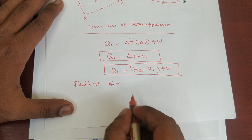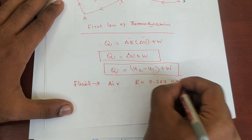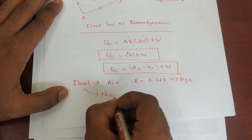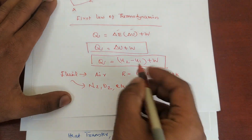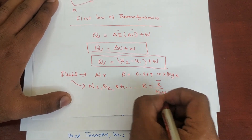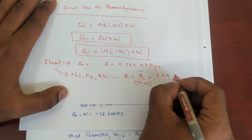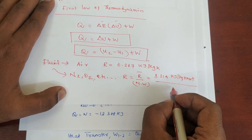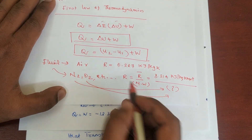If we use R for air, we use 0.287 kJ per kg Kelvin. Suppose in the fluid we have nitrogen, oxygen, or others — if we use the R value, R is equal to R-bar divided by molecular weight. R-bar is the universal gas constant: 8.314 kJ per kg Kelvin per mole, divided by the particular molecular weight of nitrogen or oxygen. Substituting, we will get R.